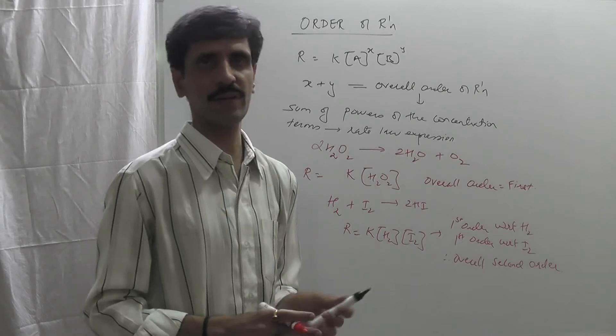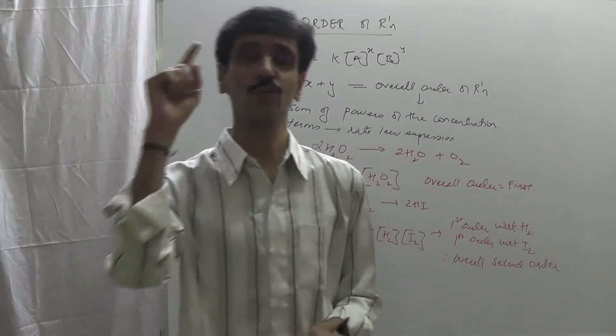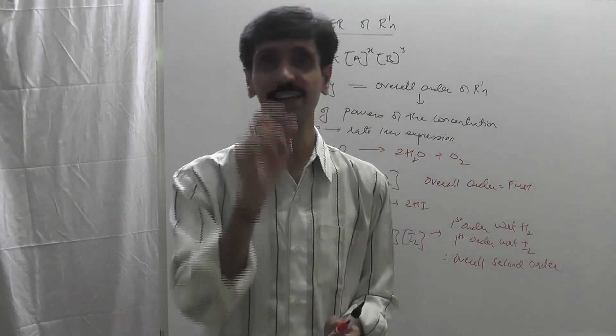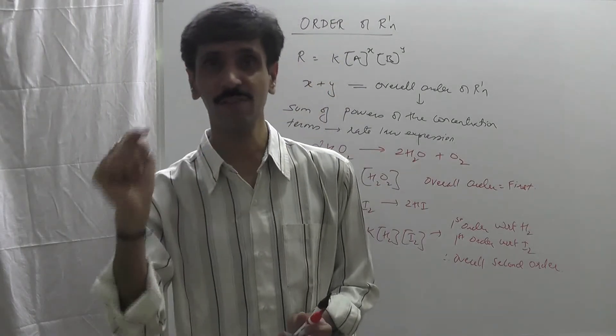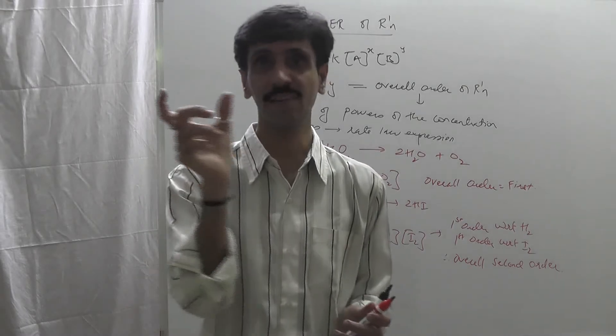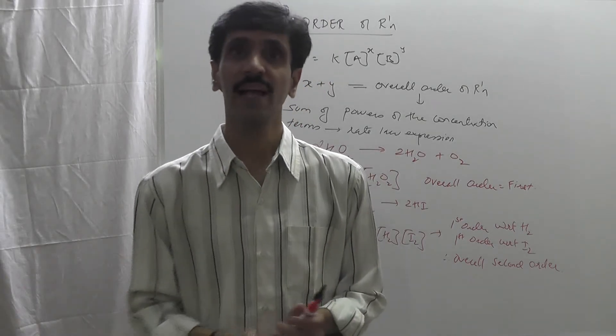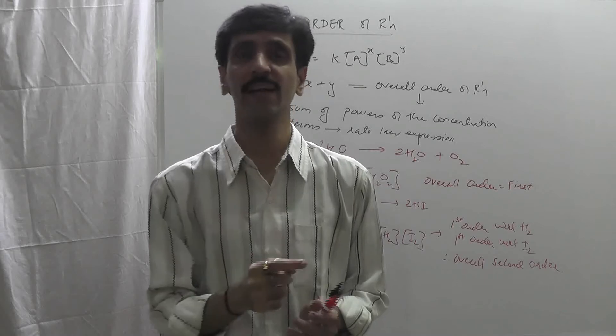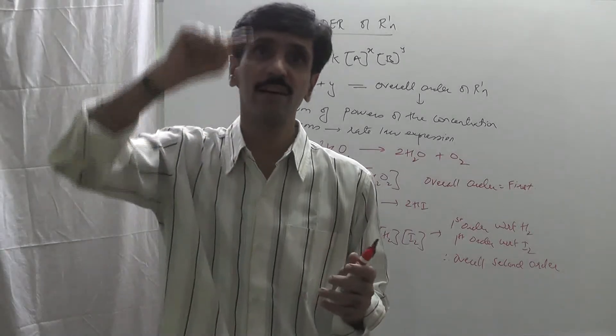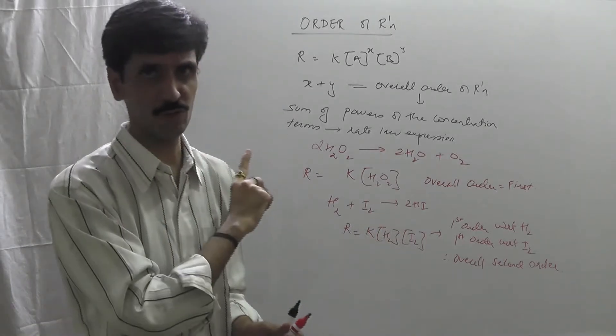So what is an order of reaction is basically nothing but we need to consider the rate law expression. The powers of the concentration terms of the reactants which are involved in the reaction - if more than one is there, then we do the summation. And that will give you the overall order of the reaction. And individual reactants' power will be the order with respect to that particular reactant. This one.